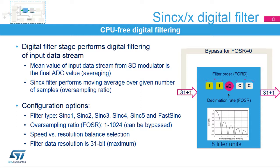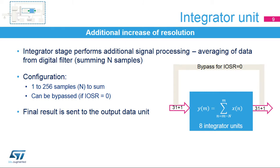The oversampling ratio can be selected in a wide range from 1 to 1,024. Not all combinations of filter order and oversampling ratios are available because in higher filter orders, the oversampling ratio must be reduced to not overflow the 31-bit data width, which is the internal filter resolution. The integrator unit performs additional simple averaging of data provided by the digital filter, just summing the data coming from the digital filter. The number of samples to be summed can be set from 1 to 256.